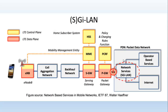Looking at this architecture, which I got from network-based services and mobile networks, in order to fully appreciate what this means, let me quickly give you a brief explanation of what GI and SGI means. GI is the interface from the Gateway GPRS Support Node, known as GGSN, towards the external network or the PDN or internet. However, that is only applicable for 2G and 3G networks. Now, talking about EPC, the Evolved Packet Core, we are looking at the LTE 4G networks — that is where SGI applies.